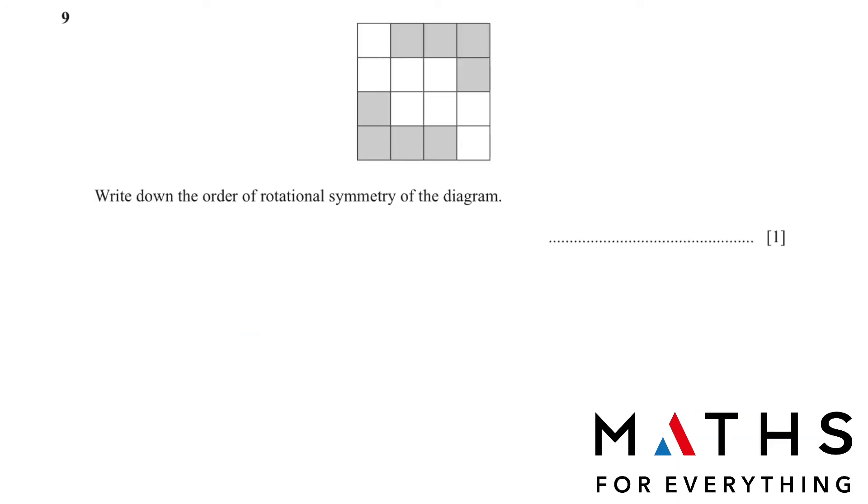Question number 9. We have been given a diagram and we have to find the order of rotational symmetry of the diagram. If you can see this side and this side is the same. Two sides are same. The same shading is there. The same number of squares are shaded in the same manner. Therefore, the order of the rotational symmetry is 2.